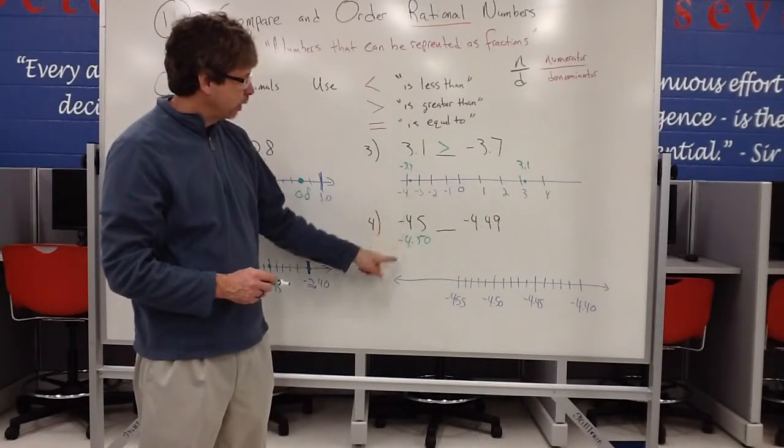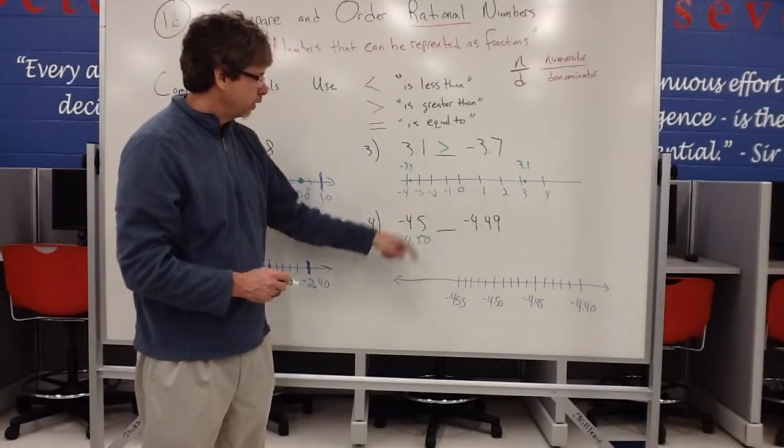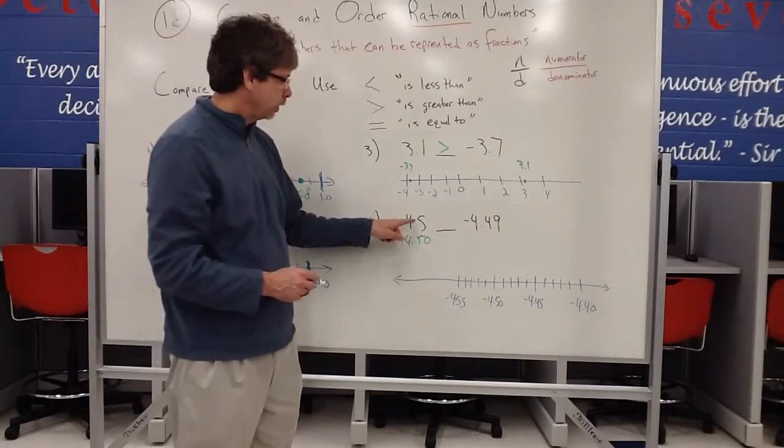The negative 4 is still in the ones place. The 5 is still in the tenths place. And there's nothing there, so no hundredths place. So those are what we call equivalent decimals.